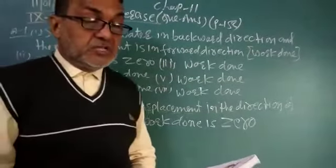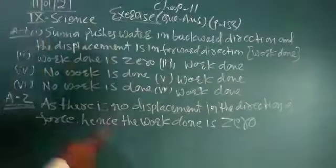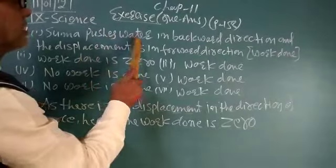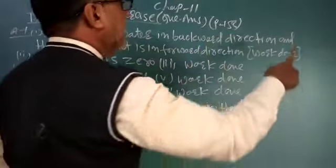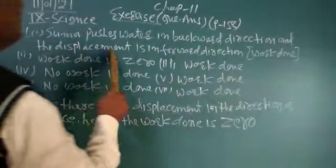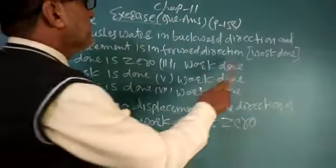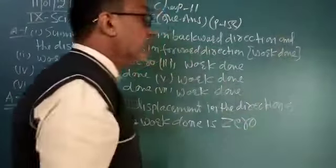Question number one: Look at these activities and understand whether work is done. First, Sumo is swimming in a pond. We know that when swimming, he pushes the water in backward direction and displacement is in forward direction. When we are swimming, it means work is done. This is number one.